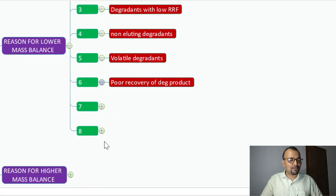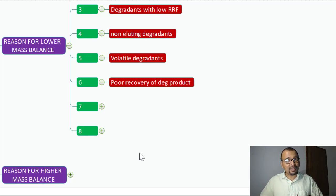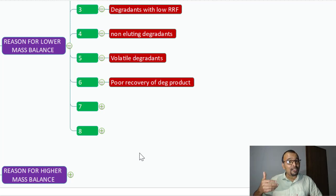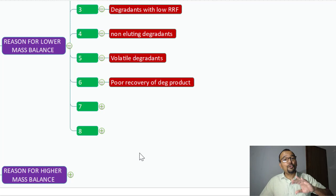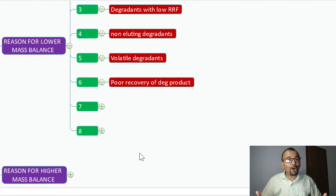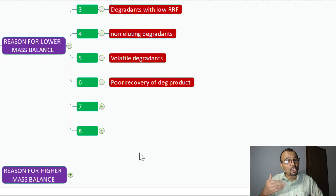Poor recovery of degradation products. In case you have a very complex sample matrix and degradants are generated but have a strong affinity towards the undissolved sample matrix, these degradants get absorbed onto the surface of the sample matrix and are not available in the actual sample solution. If you filter or centrifuge the sample solution, you are separating your degradants along with the solidified sample mass and losing all that degradant mass during quantification.